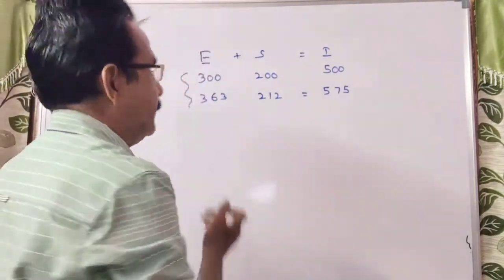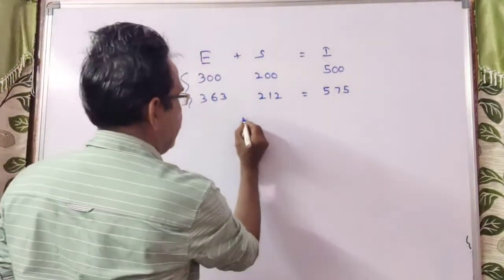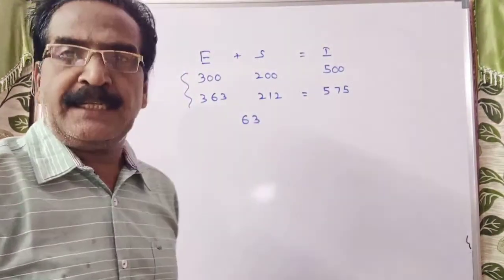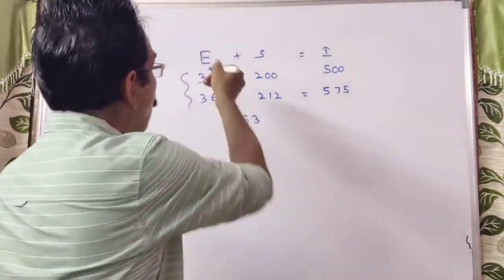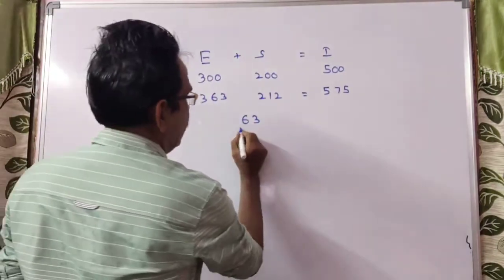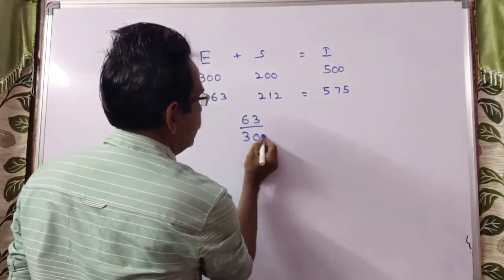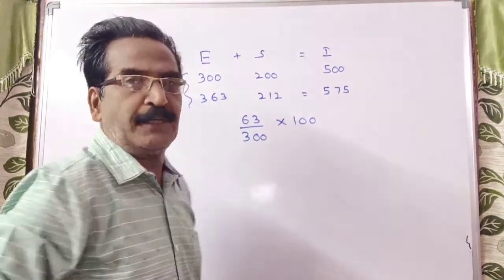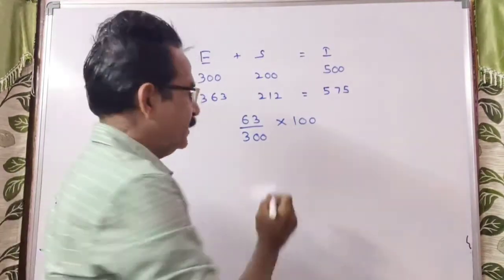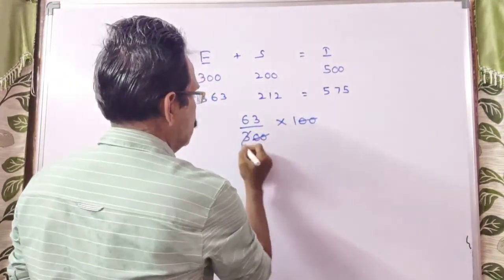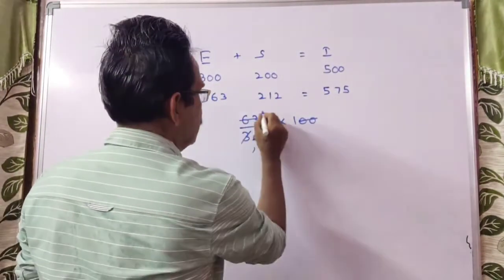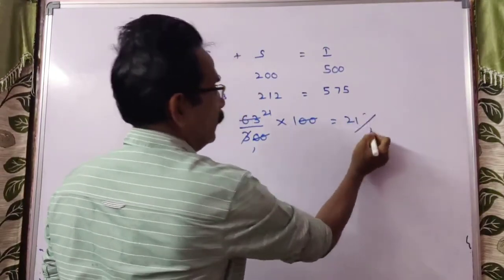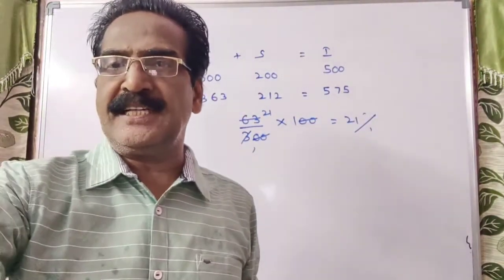The increase in expenditure is 63. To find the percentage increase: 63 over 300, multiplied by 100, equals 21%. So 21% is your answer, friends.